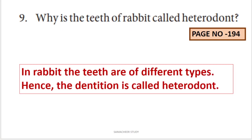Next question: why are the teeth of rabbit called heterodont? Heterodont means different types of teeth. In rabbit, the teeth are of different types — incisors, premolars, and molars — while canines are absent. Hence the dentition is called heterodont.